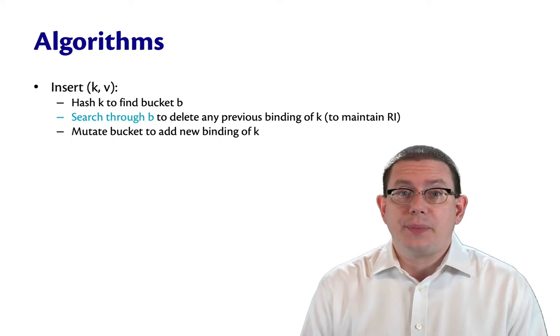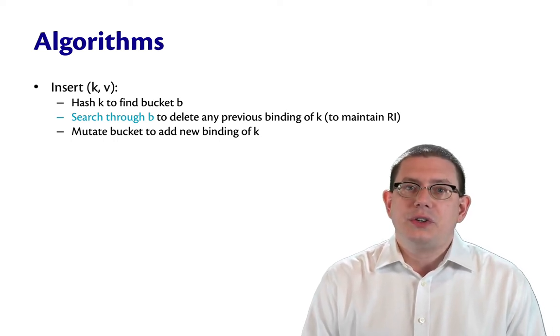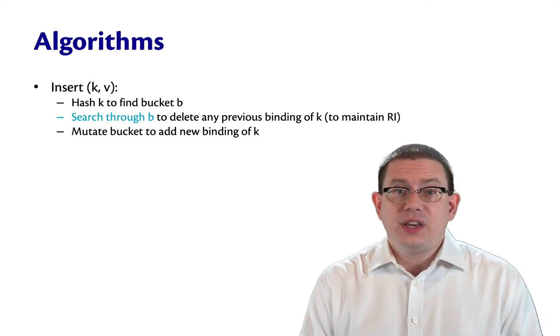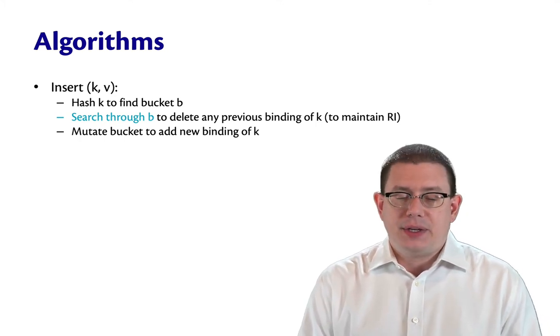Here are the algorithms for the primary operations. To insert a key value binding into the hash table, we're going to hash the key to find the bucket that it goes into.